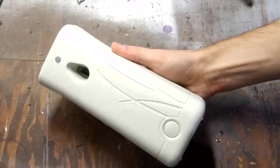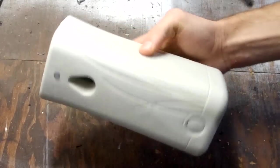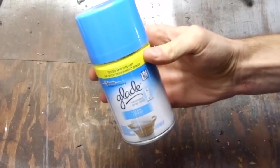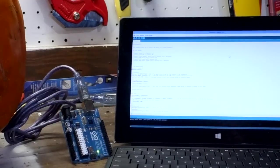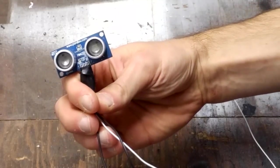The heart of this project is a Glade Automatic Fragrance Sprayer. It takes these little refill spray cans. You're also going to need an Arduino and an ultrasonic ping sensor.